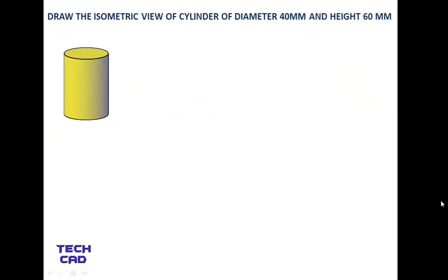In this tutorial we are going to discuss the isometric view of the cylinder. The diameter of the cylinder is 40 millimeters and the height is 60 mm. First of all, you have to understand that a cylinder is one type of a solid, and to draw an isometric view of any solid you need a box — you put your cylinder inside the box. That's why you have to make a box first, placed at an angle of 30 degrees, which gives you the isometric view of that box.